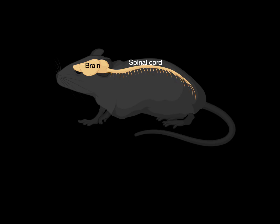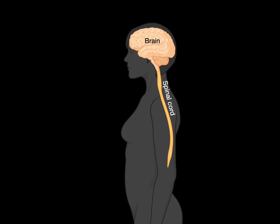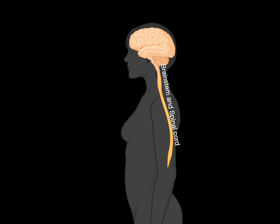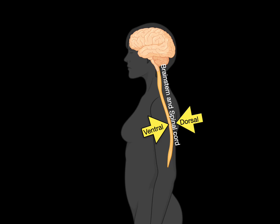The problem is we're not a mouse — we look like this. But we use the same jargon. When we talk about the brain, the part towards the front or closer to the nose, we say rostral, and towards the back, we say caudal. Instead of saying the bottom of the brain, we say ventral, and the top is dorsal. For the brainstem and spinal cord, the top is rostral and the bottom is caudal. Front is ventral and back is dorsal.